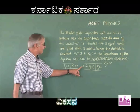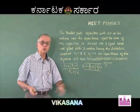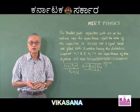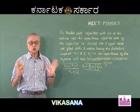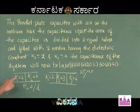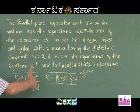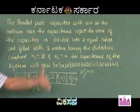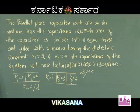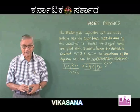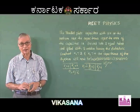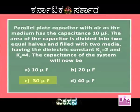Therefore, the capacity of this condenser would now become 45 microfarad. Please note: if the dielectrics are placed such that the division is vertical, then the individual capacitors should be taken to be connected in parallel. Therefore, the correct option is C.